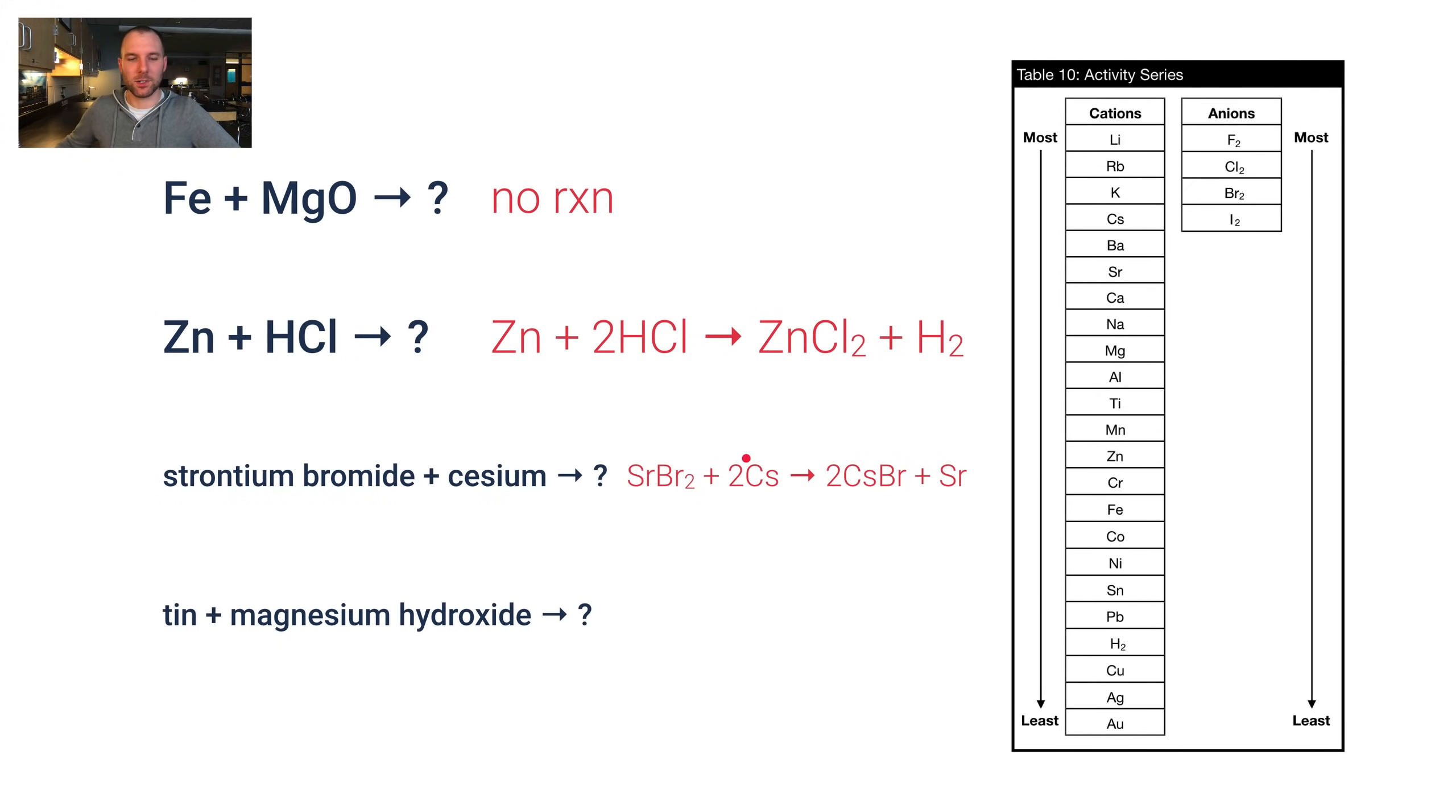Last one. Tin and magnesium hydroxide. Tin is Sn. Magnesium hydroxide is Mg(OH)2. List of polyatomic ions, if you don't remember, hydroxide is OH with a minus 1 charge. Because magnesium is in group 2, it's going to get a plus 2 charge. So that's the right formula for that. But does this reaction happen? Well, if tin is higher than magnesium, it will. The only problem is magnesium is here and tin is down here though. So for this one, no reaction.